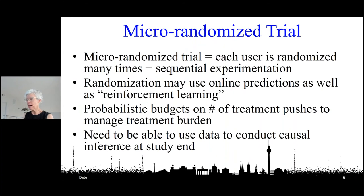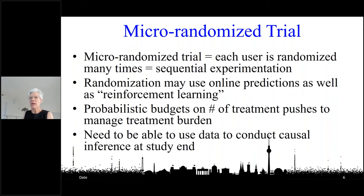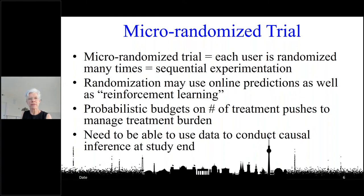In a micro randomized trial, each user is randomized many times. Depending on the application — say a 42-day trial — each user might be randomized five times a day or once a day. That's why we use the term 'micro randomization.' This randomization can be quite simple, such as randomizing over a fixed probability, which we have done.